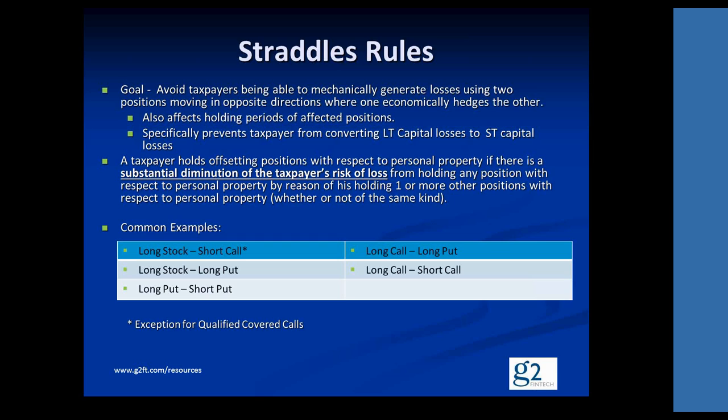This is not the same as "substantially identical," and do not think that one generally implies the other. It's much easier for one position to diminish the risk of loss from another position than it is for two positions to be considered substantially identical. There are far more cases where two securities will be considered offsetting positions that invoke the straddle rule than there are cases that are substantially identical.